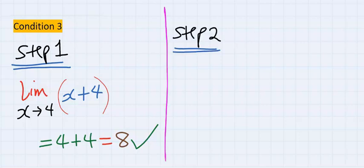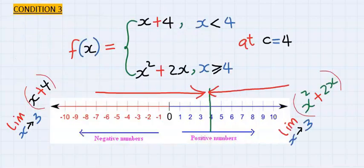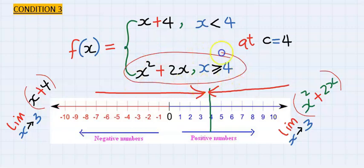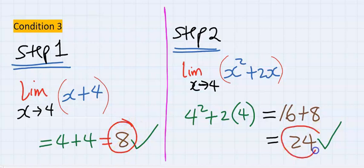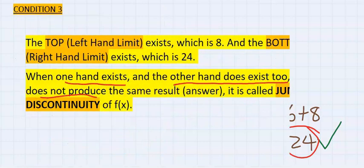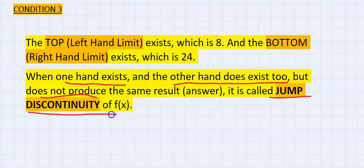In step two, and taking the limit of the right hand side, we got 24, which is an answer, and does exist. However, this is an answer, and this also is an answer. But both are not equal. This is called jump discontinuity.